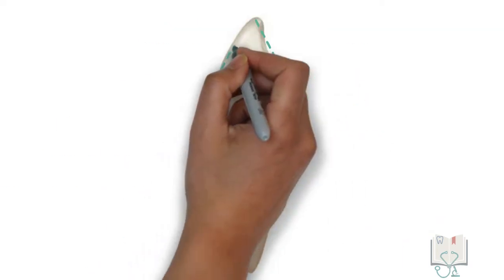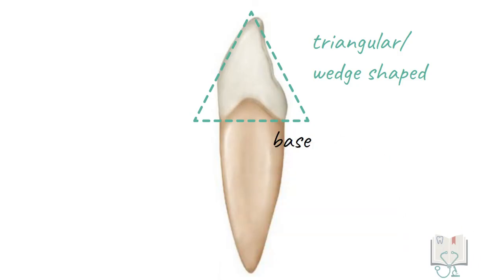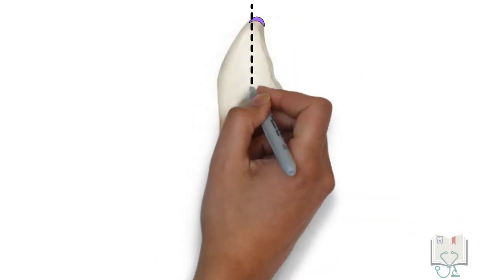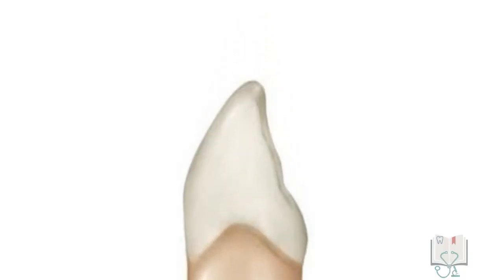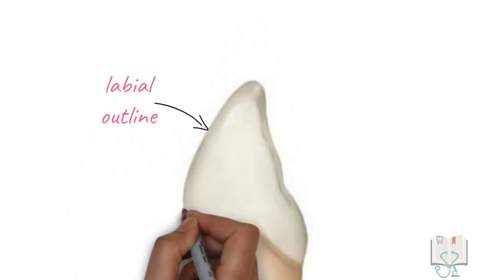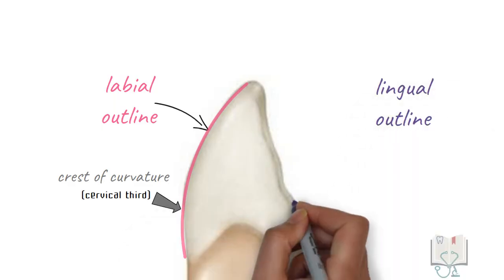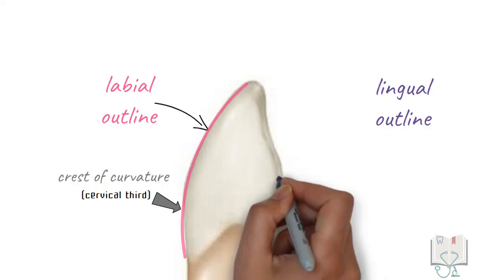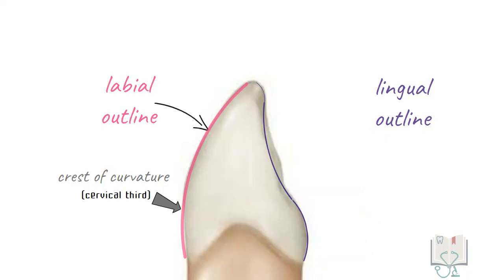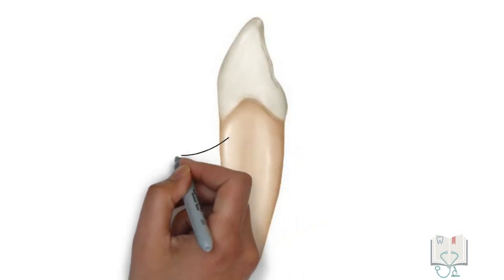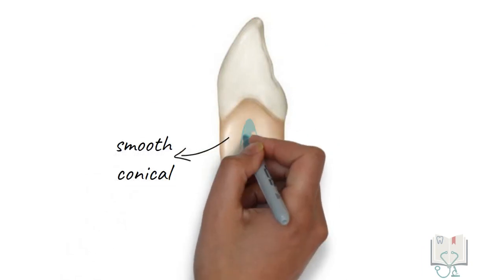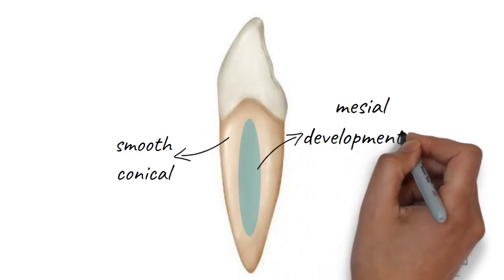Next, the mesial aspect. The outline form of the crown is triangular or wedge-shaped with its base at the cervix. The cusp tip lies lingual to the midline axis of the tooth. The labial surface of the crown is convex with its crest of curvature at the level of the cingulum. On the other hand, the lingual outline is convex in the cervical third, concave in the middle third and convex in the incisal third. The cervical line is convex and the convexity is towards the crown. The root is smooth and tapering. A depression runs along the root length called mesial developmental depression.